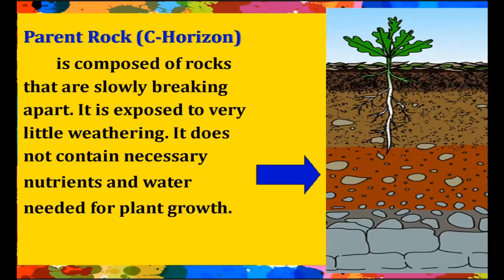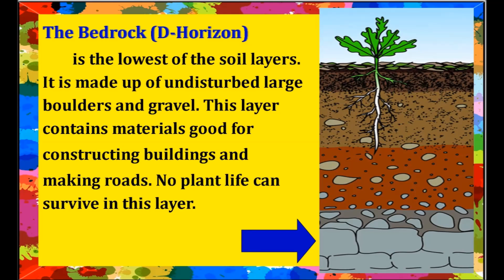The parent rock, or C-horizon, is composed of rocks that are slowly breaking apart. It is exposed to very little weathering and does not contain the necessary nutrients and water needed for plant growth. The bedrock is the lowest of the soil layers, made up of undisturbed large boulders and gravel. This layer contains materials good for constructing buildings and making roads.